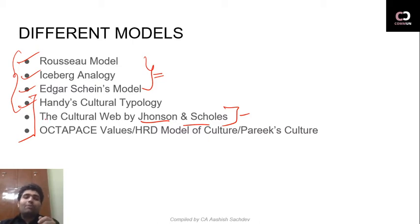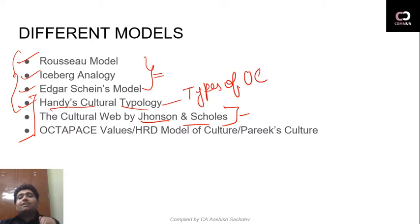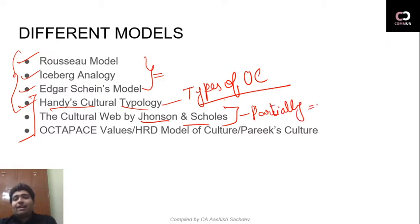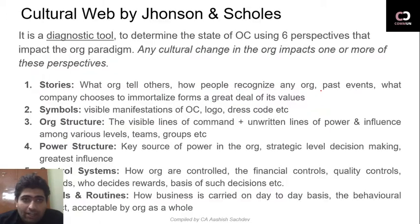My name is Ashi Sasdev. The last three models need to be read in a slightly different way, and this differentiation is important so that when you revise, things are easily remembered. In Handy's cultural typology we read about different types of organizational culture that can exist in any organization. And today in the Cultural Web we will see something partially related to those models, plus new things added.